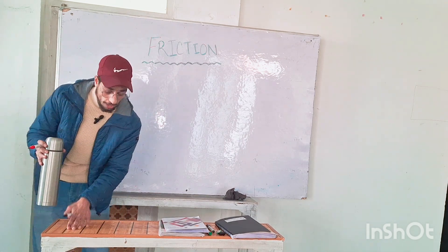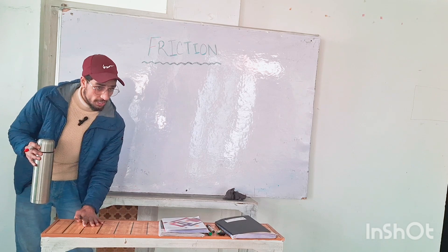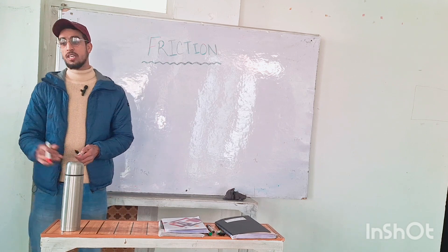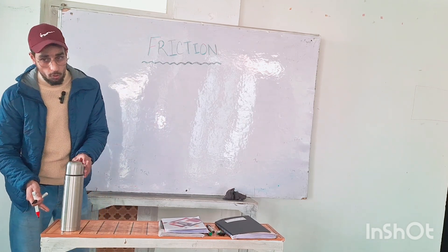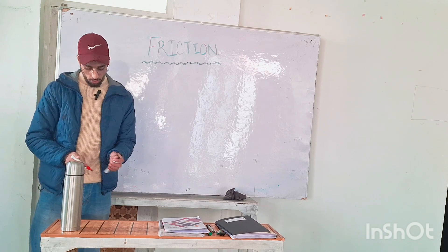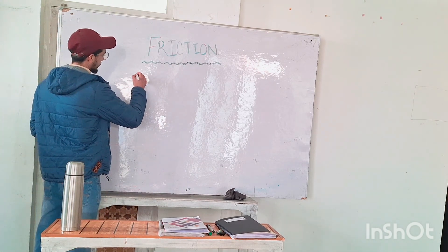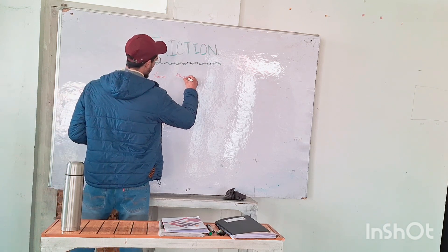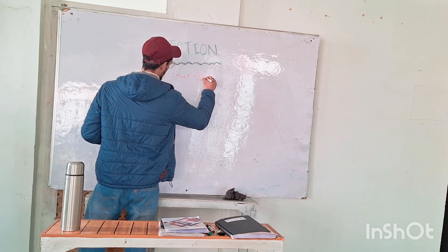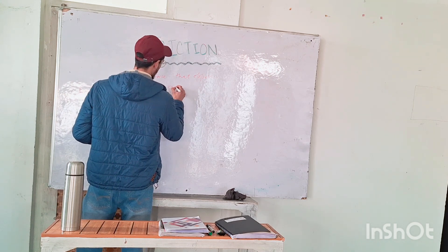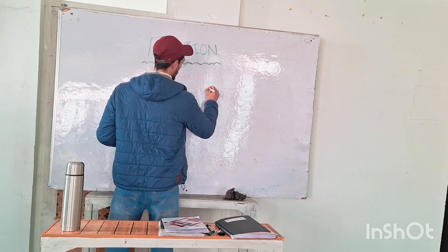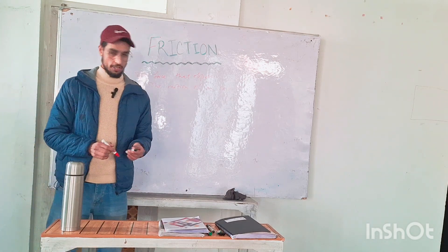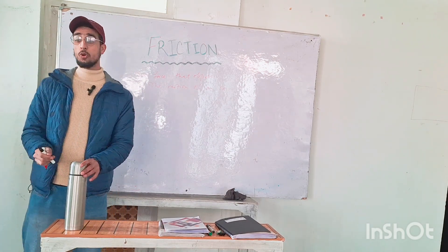This is the surface of one object and this is another object. Now I am putting it here — will a frictional force generate between them? Exactly, it will generate. So the force of friction is the force that opposes the motion of an object when it is in contact with another object.